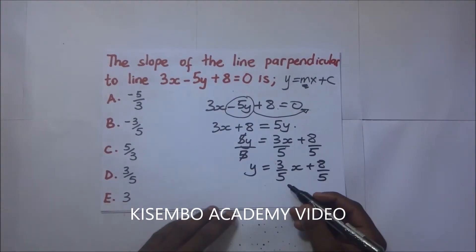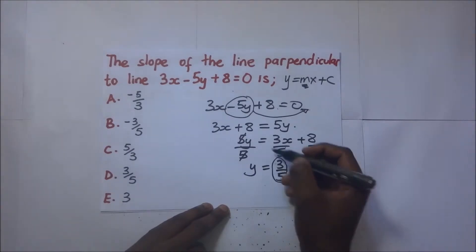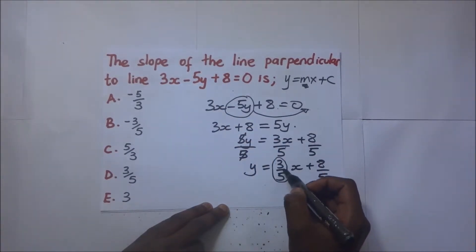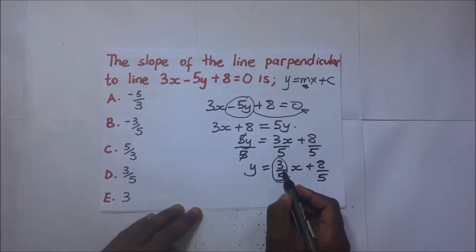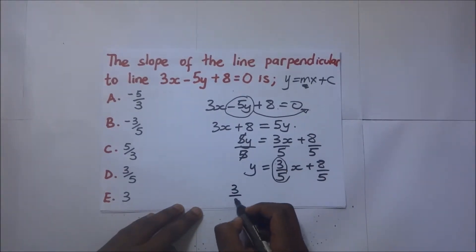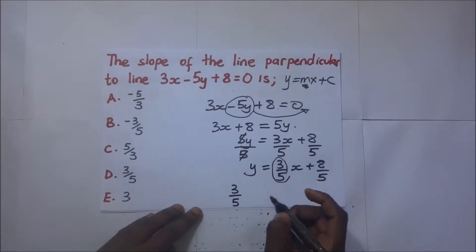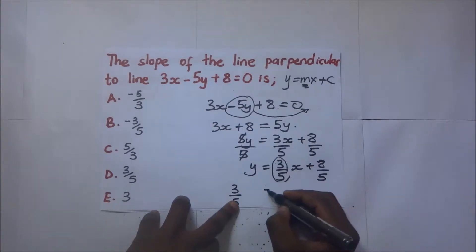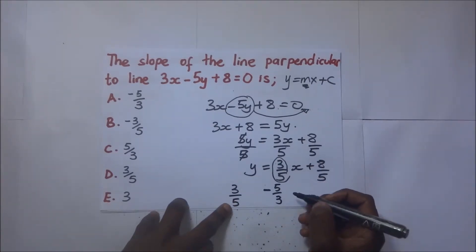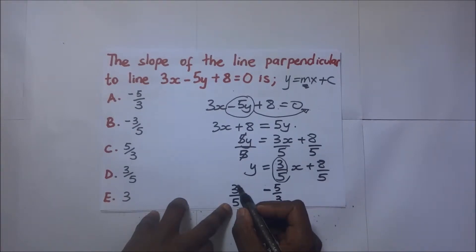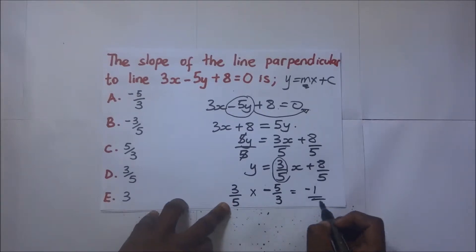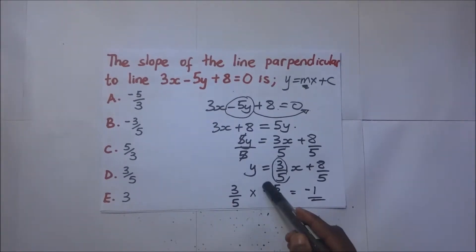A line perpendicular to this means its gradient is the negative reciprocal of 3 over 5. When we multiply the gradients of perpendicular lines they must give negative 1. So the gradient of the perpendicular line is negative 5 over 3.